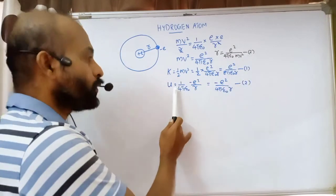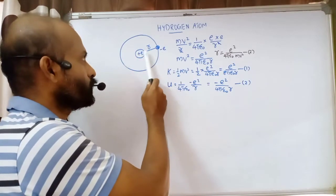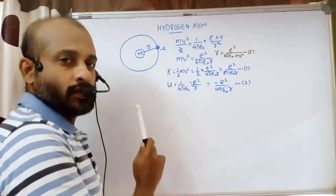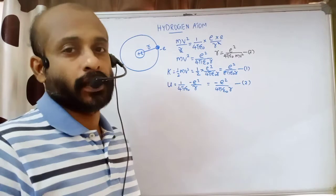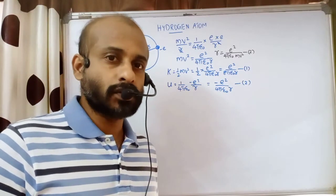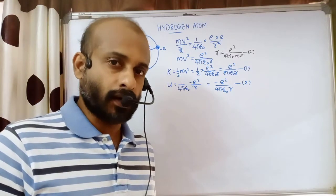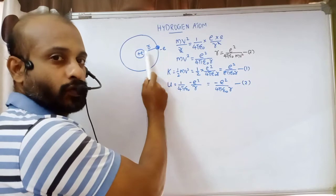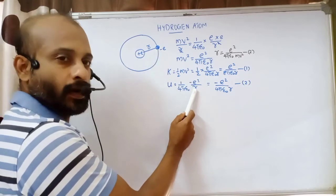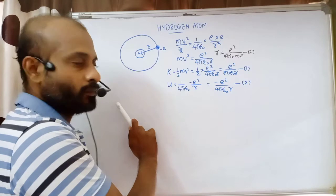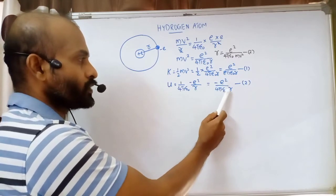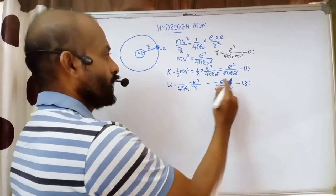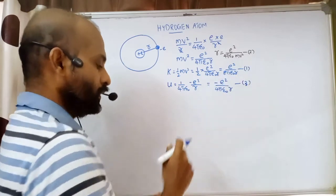Now we need potential energy. Between the electron and proton there is a strong attractive force. From electrostatics, potential energy equals one by four pi epsilon zero times q1 q2 divided by r. Here q1 is plus e and q2 is minus e, so q1 q2 is minus e squared. The potential energy is minus e squared by four pi epsilon zero r. This is equation number three.